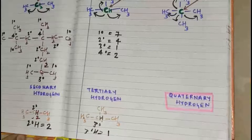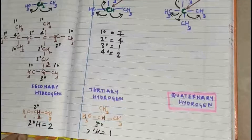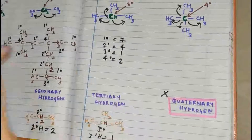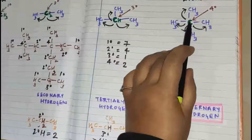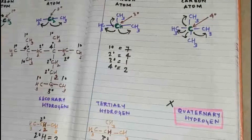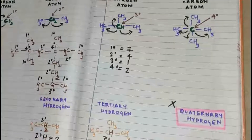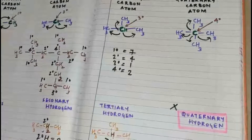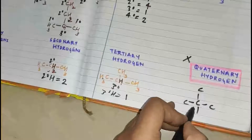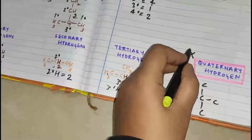Can we have a quaternary hydrogen atom? The answer is no. We don't have a quaternary hydrogen atom because carbon can form only four bonds. For a carbon to be quaternary, it must form four bonds with other carbon atoms. If it is already forming four bonds with carbon atoms, there is no bond left to form with a hydrogen atom. So we don't have a quaternary hydrogen — the carbon is bonded to all carbon atoms and you don't have a hydrogen there.